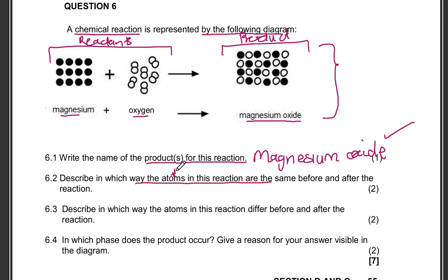Question 6.2: describe in which way the atoms in this reaction are the same before and after the reaction. You need to describe how the atoms for the particular chemical reaction are the same before and after. What we are basically seeing here is that the same amount of atoms that you have before the reaction is the same as the number of atoms you have after the reaction.